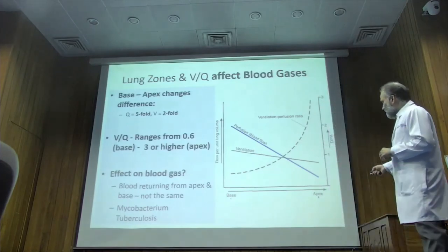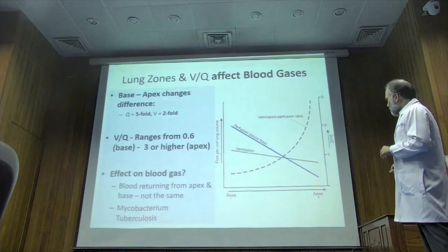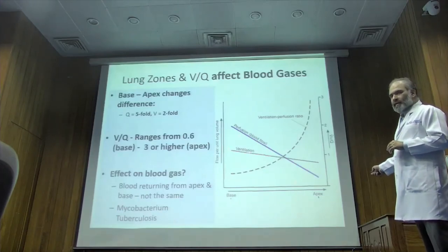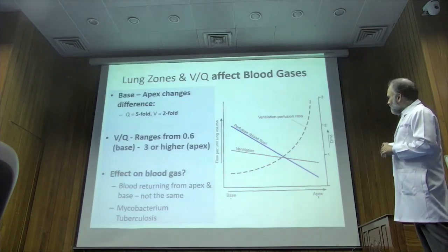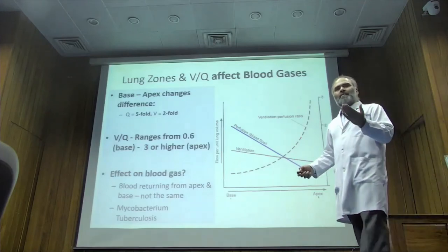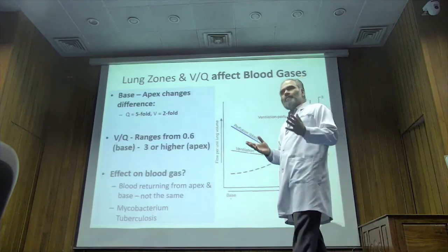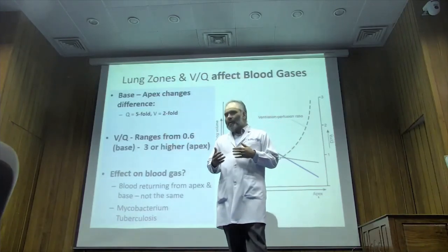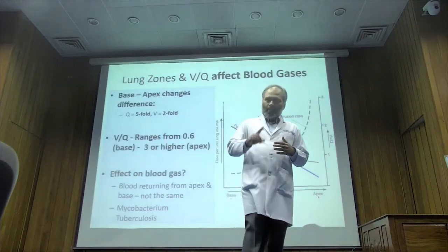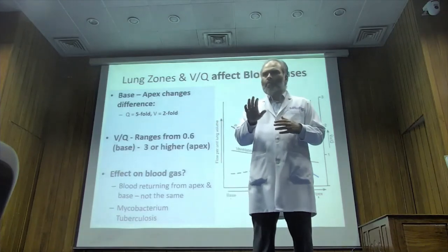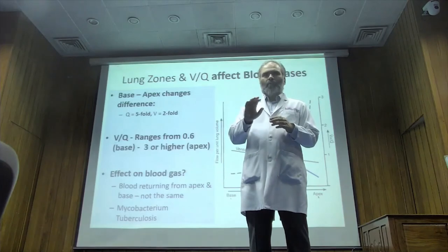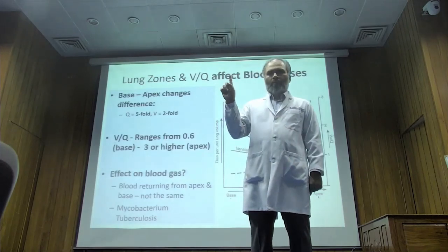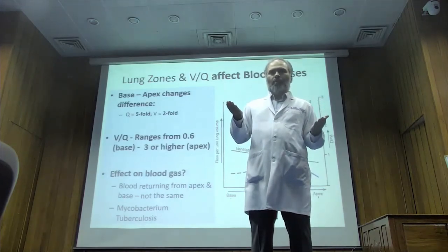This diagram shows starting from the base going to the apex: perfusion drops, ventilation also drops, but perfusion really drops much more compared to ventilation. When you calculate V/Q it rises — a graphical representation of that. In the middle portions, V/Q should be near to one, almost equal. As you go down it drops, as you go up it increases.